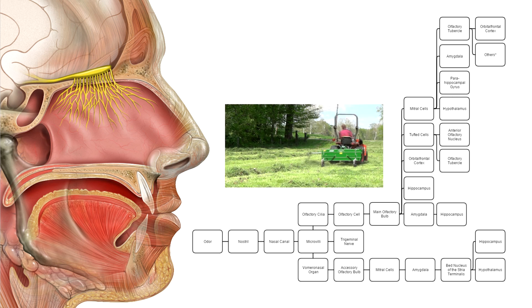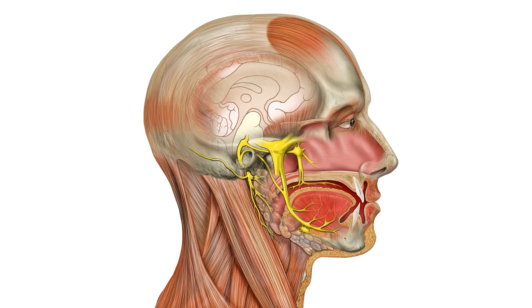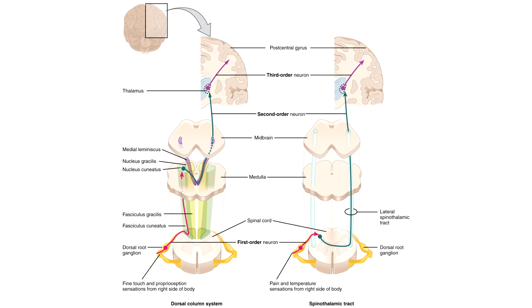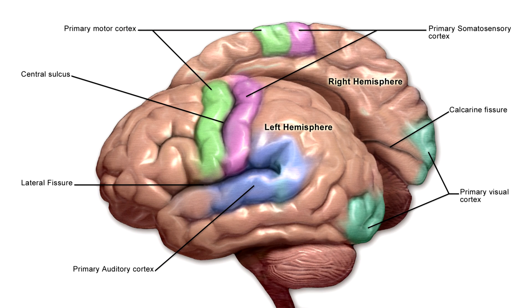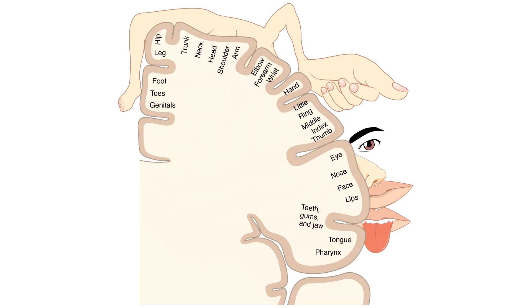Thus, certain odors may reawaken several years old memories. Whereas stimuli from the tongue travels through the brainstem, before reaching intermediate parts and the gustatory cortex. Information from receptors in the skin and muscles is processed at the top of the brain, in the somatosensory cortex, where the information is processed in an ordered fashion along the cortex.